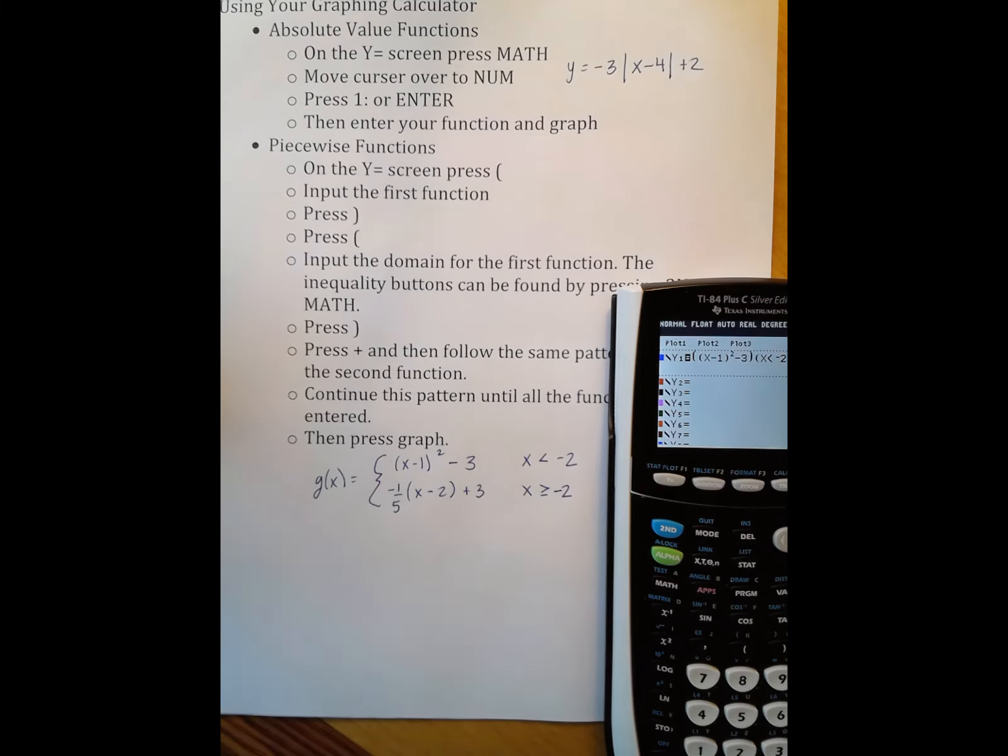In order to tell the calculator that I want both, that they're all connected, I say plus. And then I use the same process again. So I have my first sub function, negative 1 divided by 5, and I'm going to use parentheses there just to be sure the calculator understands the order of operations. X minus 2 plus 3, close parentheses. I've got my second sub function inputted.